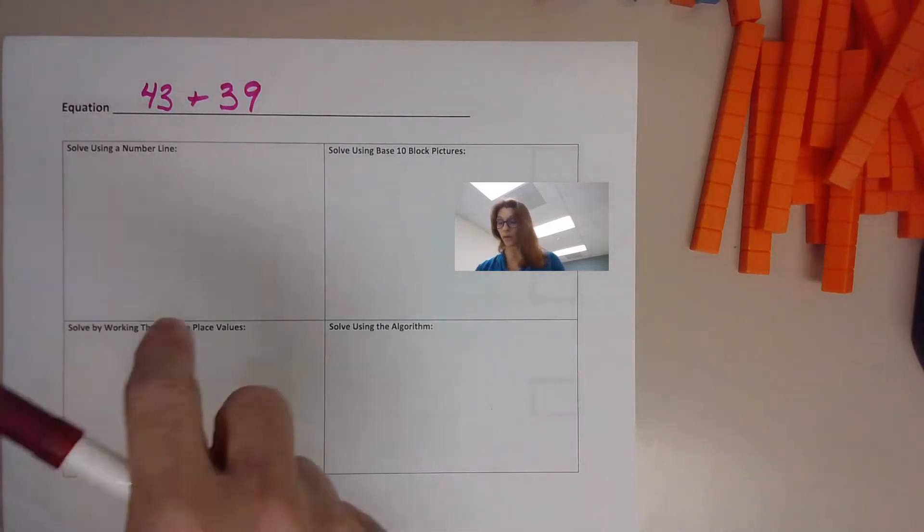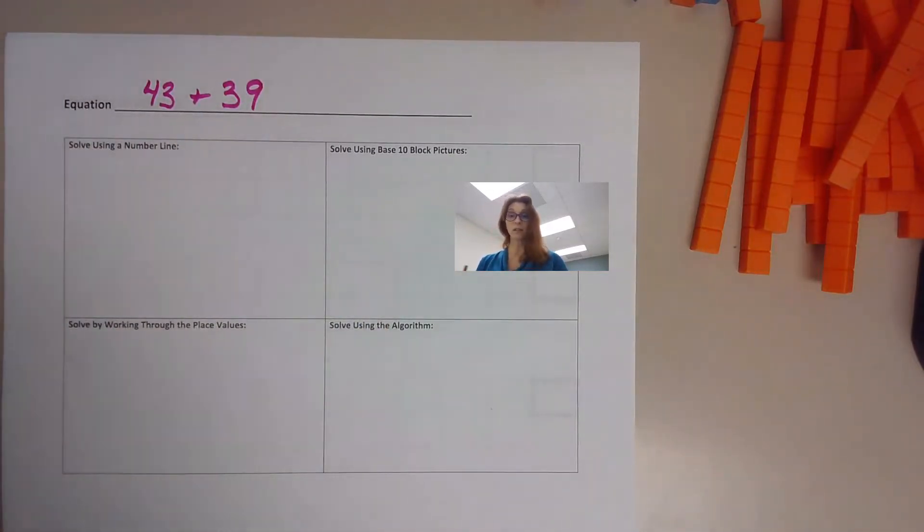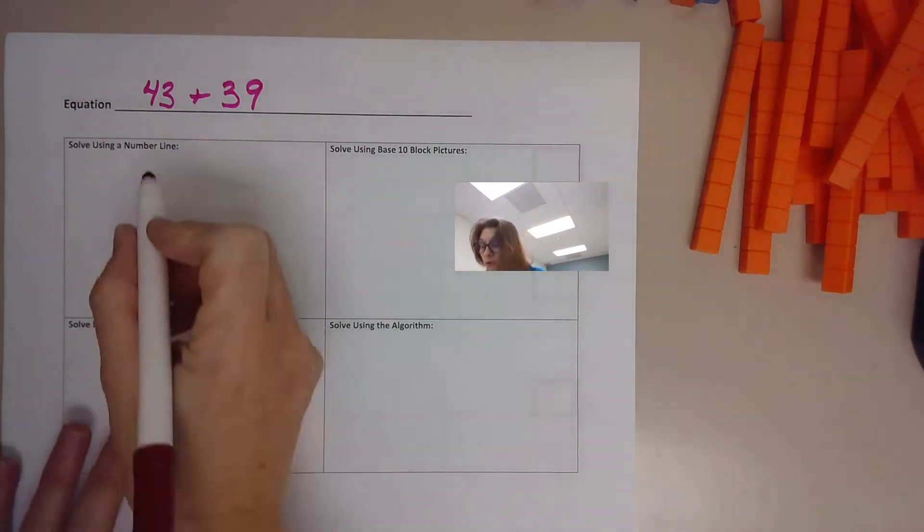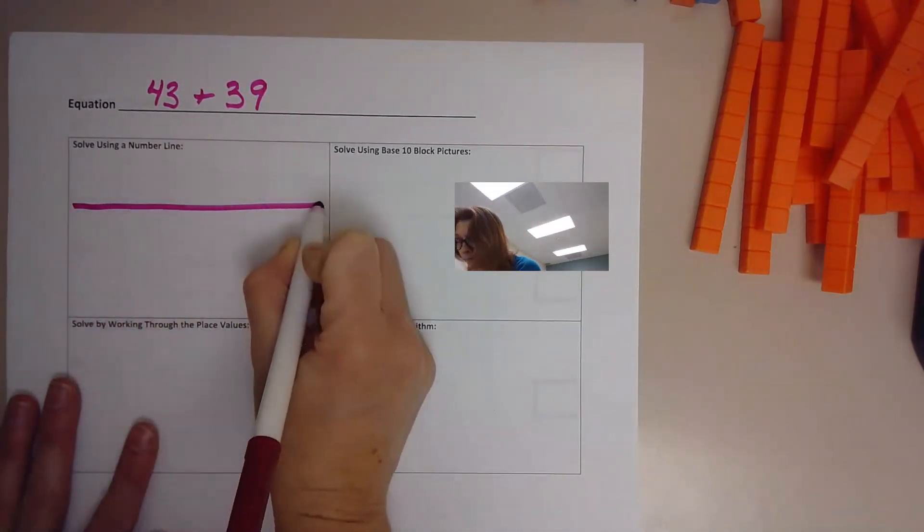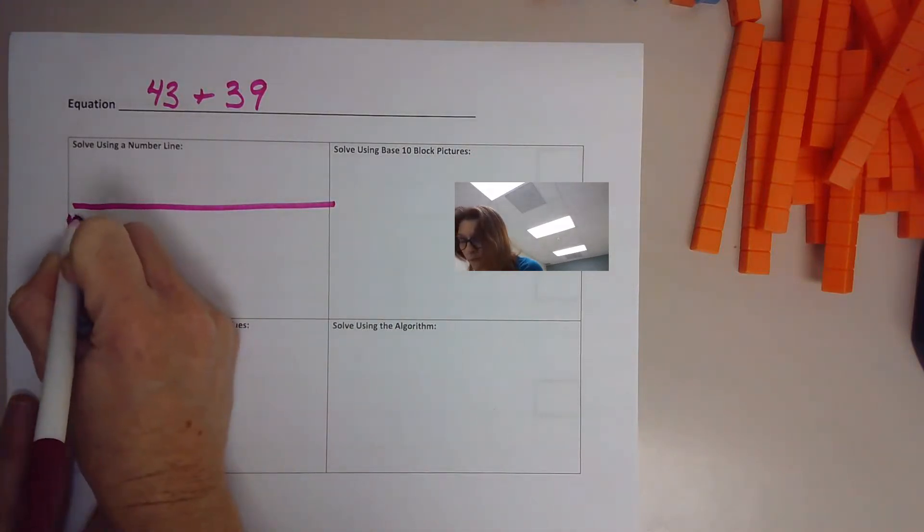I always like when I'm adding to start with my larger number, start from that number, and then add further on. So what we're going to do is start at 43. Okay, using our number line. Here we are at 43.